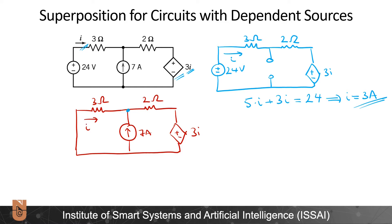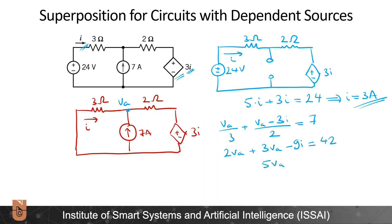Now I calculate the output for the current source. Redrawing the circuit with 3 ohms, 5 ohms, 3 ohms, 2 ohms, the dependent source 3i, and the 7-ampere source — with the voltage source short-circuited. I use node voltage analysis, writing VA at the node. KCL gives: VA over 3 plus (VA minus 3i) divided by 2 equals 7. Simplifying: 5VA minus 9i equals 42. Since I equals minus VA over 3, we have VA equals minus 3i.